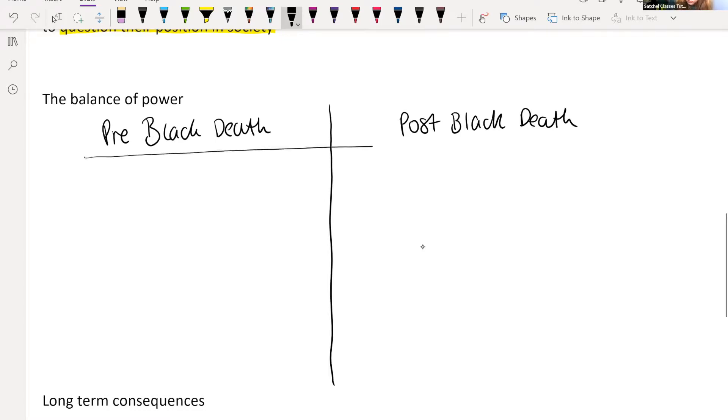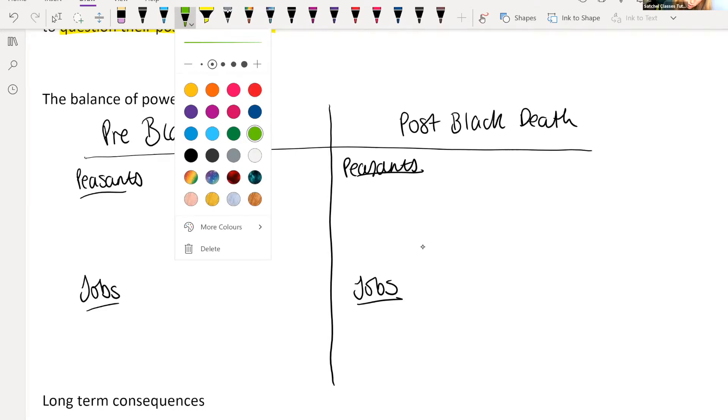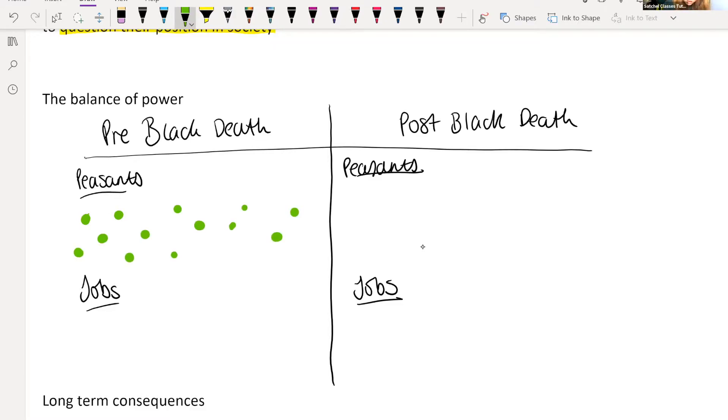We've got peasants and then jobs on both sides. I'm just going to do this by dots and these numbers are absolutely by no means accurate. It's just to give you an idea of the numbers that we've got here. This is just to give you an idea. Don't worry about the numbers. Don't count them or anything like that.